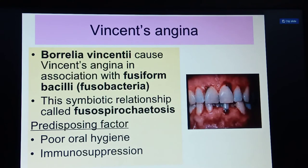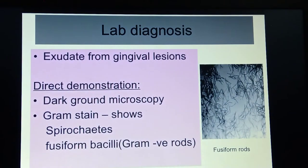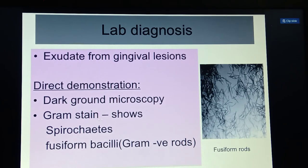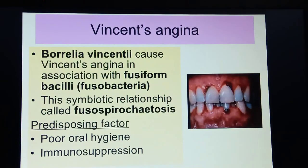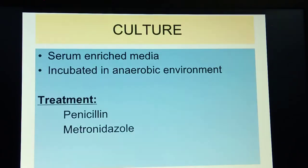Predisposing factors for Vincent's angina include poor oral hygiene and immunosuppression — low immunity levels. For lab diagnosis, you collect exudate from gingival lesions and perform direct demonstration under a dark-ground microscope or gram staining. Gram staining reveals the fusiform rod-shaped spiral structure of the bacteria.